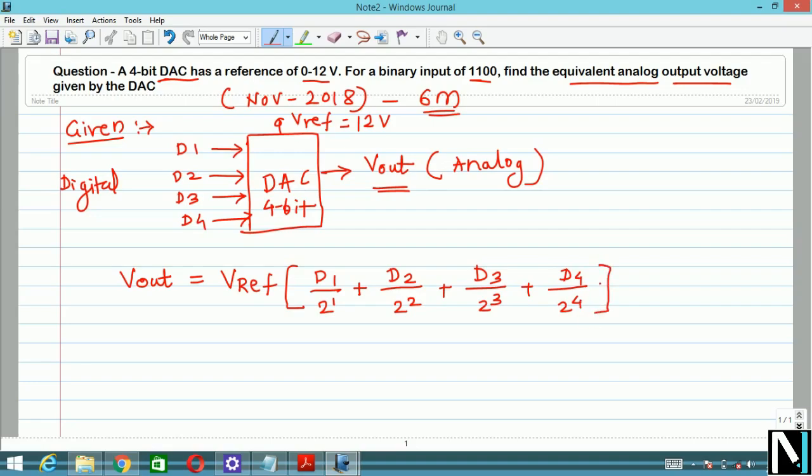As this is a 4-bit DAC, if it would have been an N-bit DAC, then the formula would be DN upon 2 raise to N. You have to go on adding that and the last element will be DN upon 2 raise to N. So keep in mind they may ask it for 10-bit DAC, 3-bit DAC, and here they have asked for 4-bit DAC.